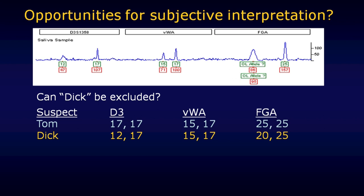The question becomes: how impressed should we be that Tom can't be excluded? Before talking about specific statistics, I want you to forget everything you know about Tom. Now think about another suspect — let's talk about Dick — and see what we think about Dick as a possible contributor to this evidence sample. Sometimes when I give this talk, I start with Dick and not Tom at all.